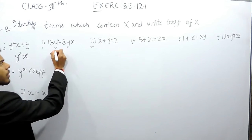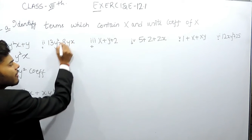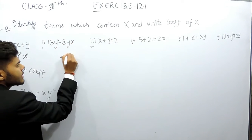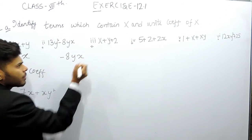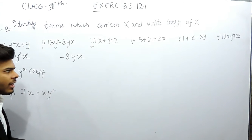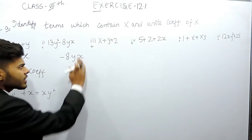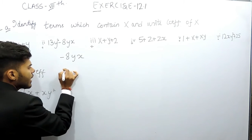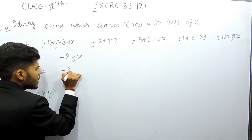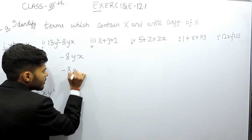Now the term having x is minus 8yx. Because we have to write the coefficient of x, we'll exclude this x and write the remaining term, that is minus 8y.